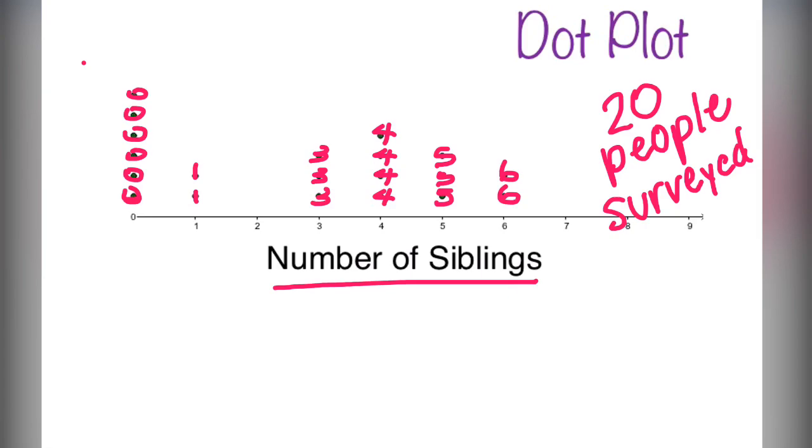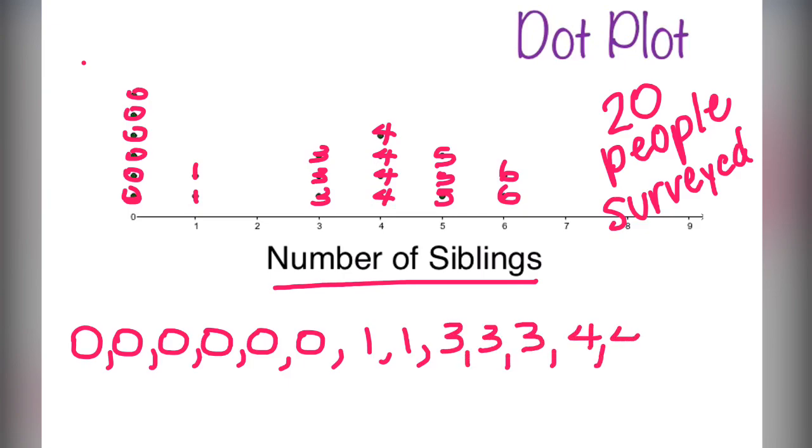We can list out this data in order, showing that there will be six zeros, two ones, three threes, four fours, three fives, and two sixes. And again, if you would count that, there would be 20 pieces of data, because that is how many people were surveyed.